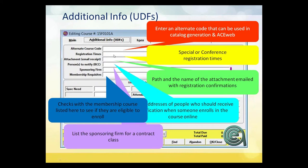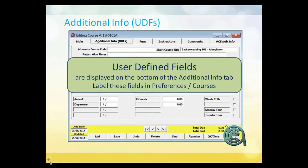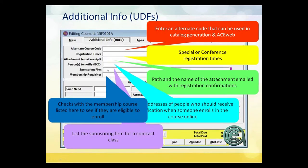Registration times — if you have a certain registration time, mainly for workshops or conferences, you can put that in and reference it in your materials. Email attachments — if you are sending out attachments with email receipts, you can do that. For people who want to be notified whenever a registration comes in, you can add your email to the BCC line and automatically get a blind carbon copy of any registration in that class.